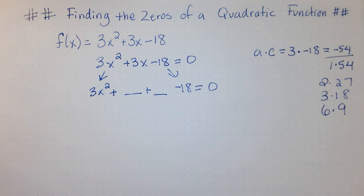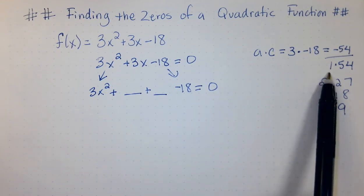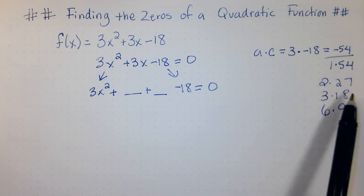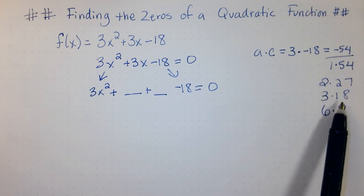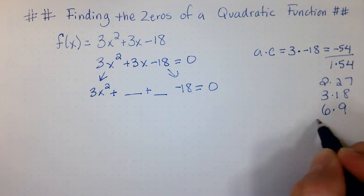Alright, which one of these sets of factors is going to give me 3? Now, we do need to take into consideration that the 54 is negative. That means that one of these factors must also be negative in order to multiply to give that negative 54. If we look at each of these combinations, we can see that none of these are going to add to give me 3 except for 6 and 9.